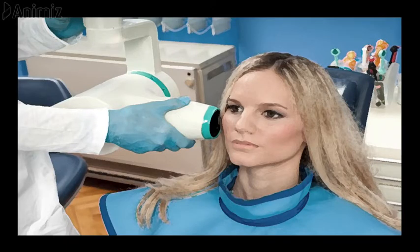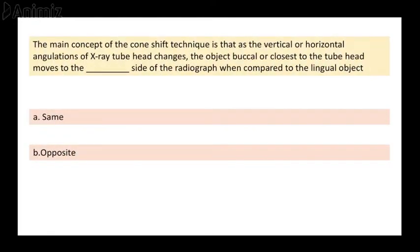In this video we are going to discuss the SLOB rule. Starting with a question from the dental decks: the main concept of the cone shift technique is that as the vertical or horizontal angulation of the x-ray tube head changes, the object buccal or closest to the tube head will move to which side of the radiograph when compared to the lingual object? The options are same or opposite.